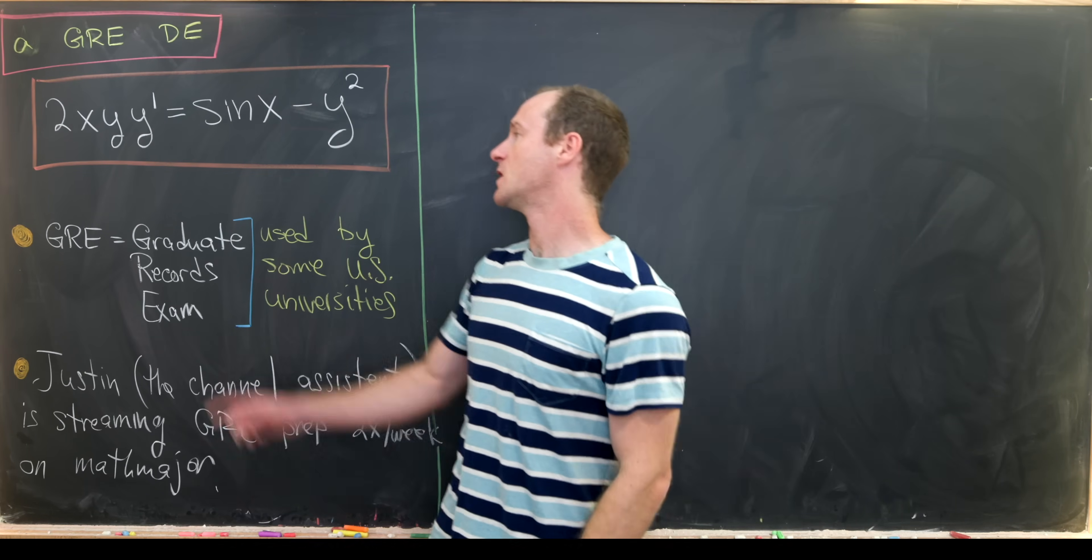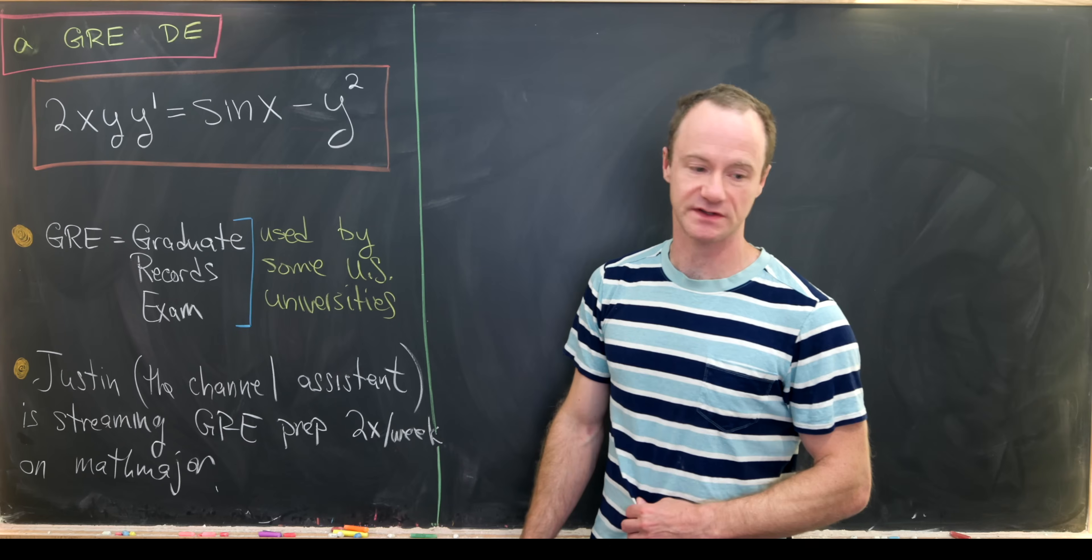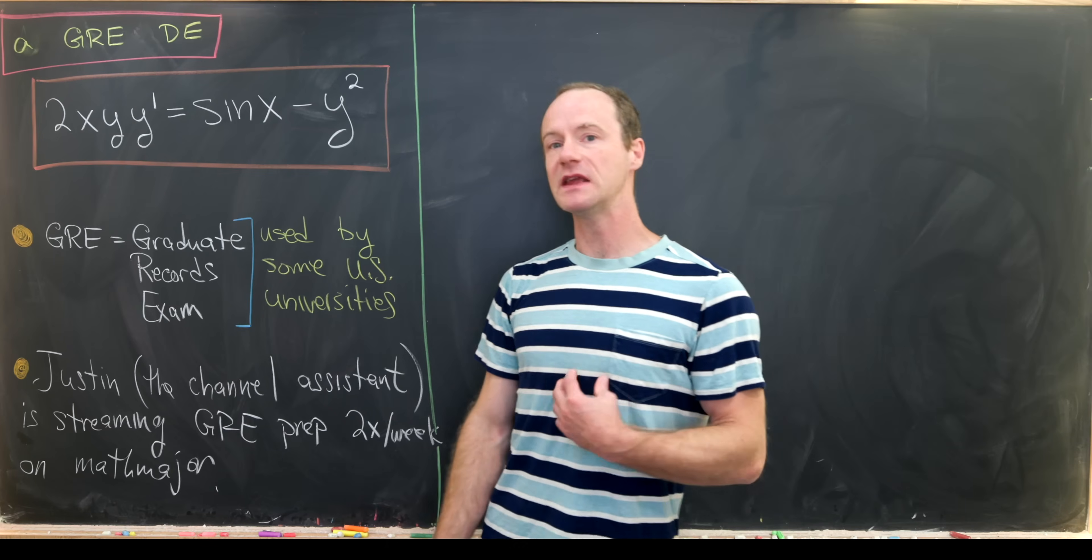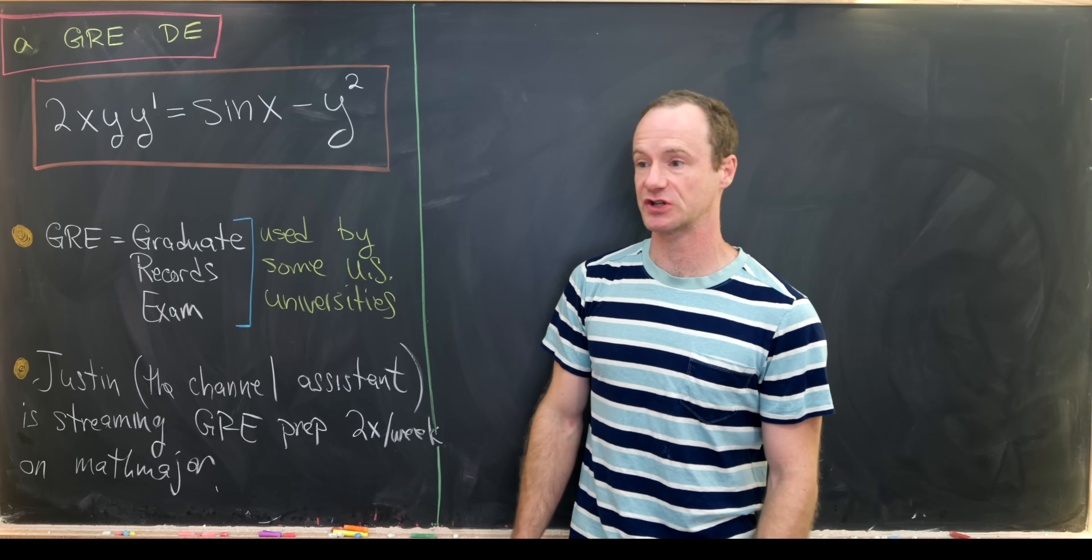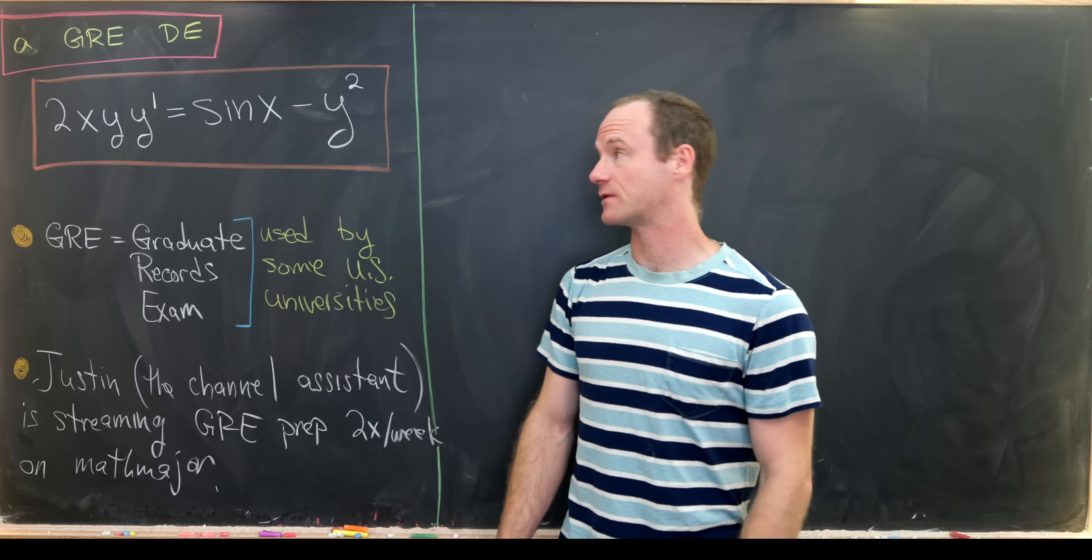Okay, so let's see what we've got. We've got 2x times y times y prime equals sine of x minus y squared. We immediately see that this is a first order non-linear differential equation, and it's also not a separable differential equation.